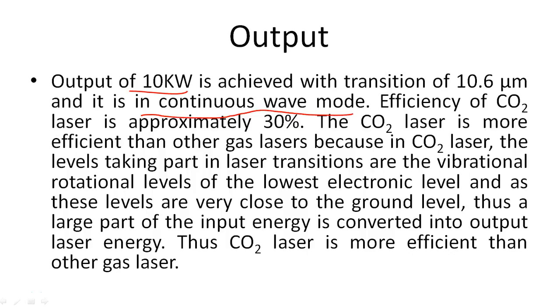Efficiency of CO2 laser is approximately 30%. The CO2 laser is more efficient than other gas lasers because in CO2 laser, the levels taking part in laser transitions are the vibrational and rotational levels of the lowest electronic level. As these levels are very close to the ground level, a large part of the input energy is converted into output laser energy. Thus CO2 laser is more efficient than other gas lasers.